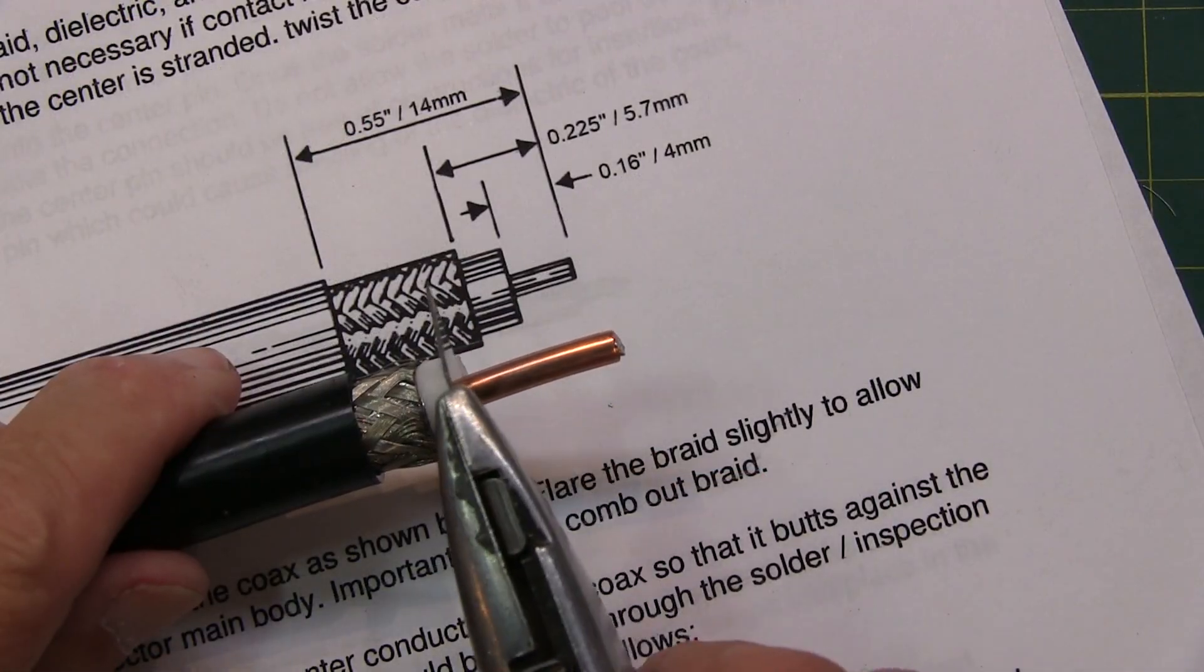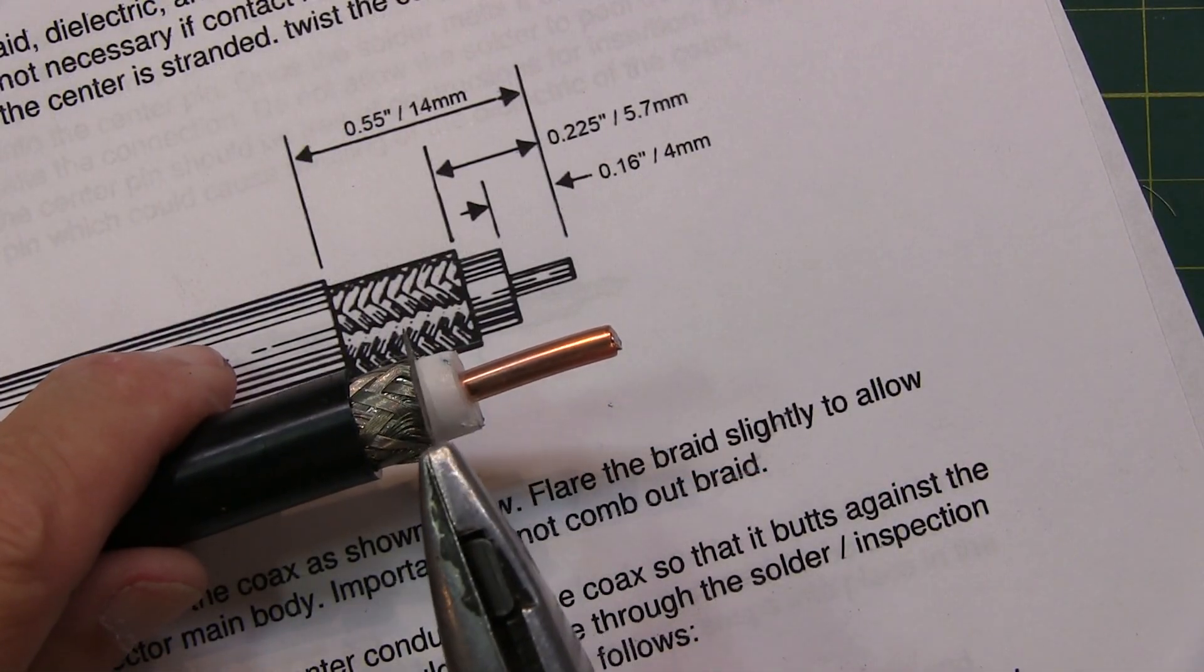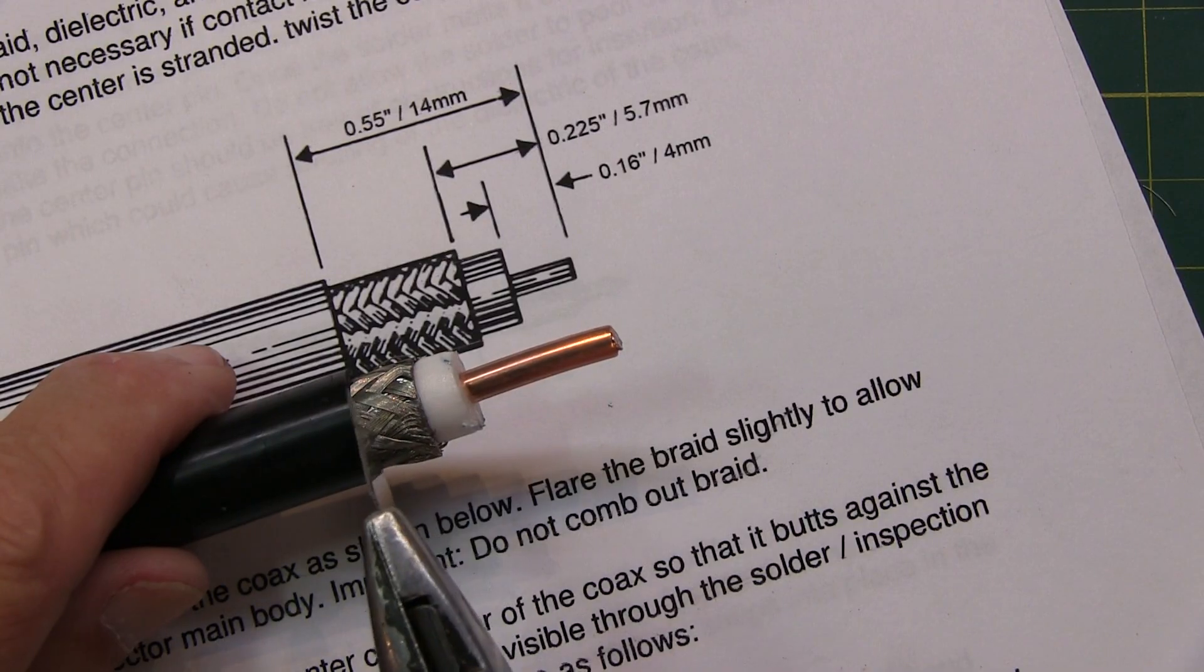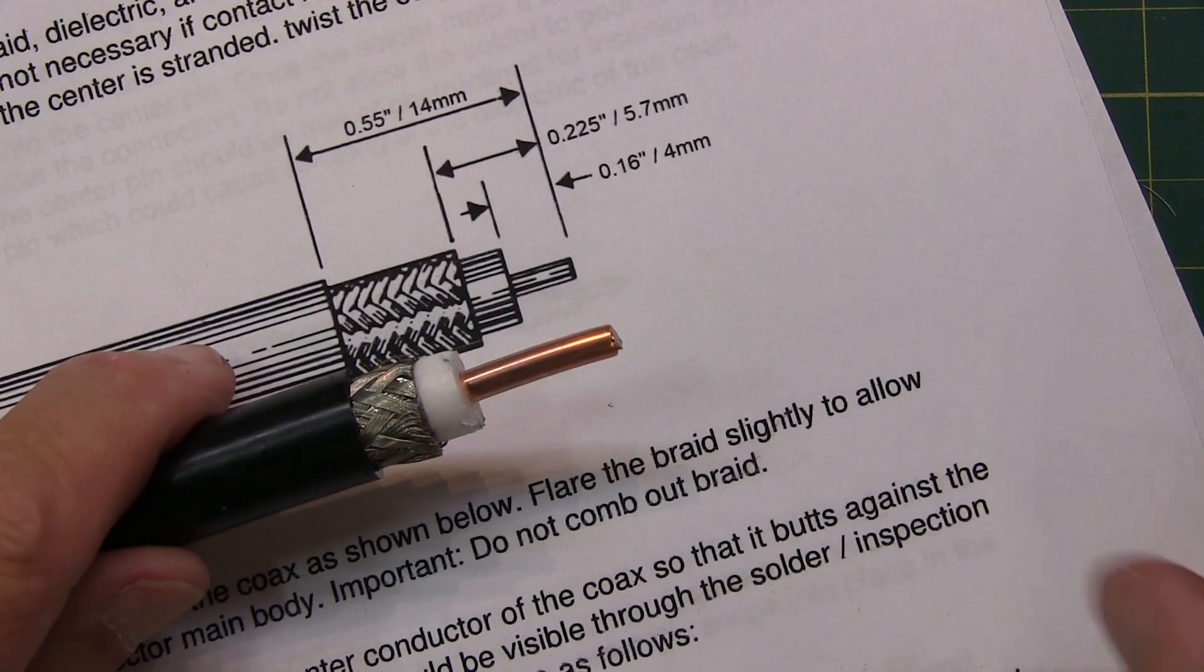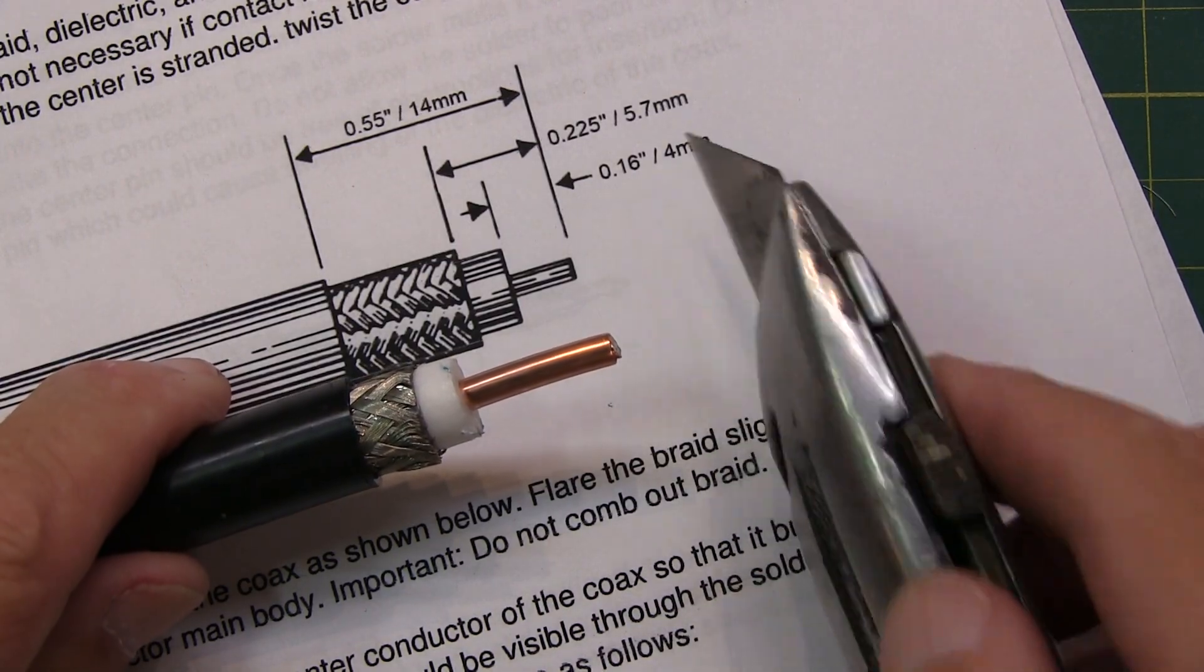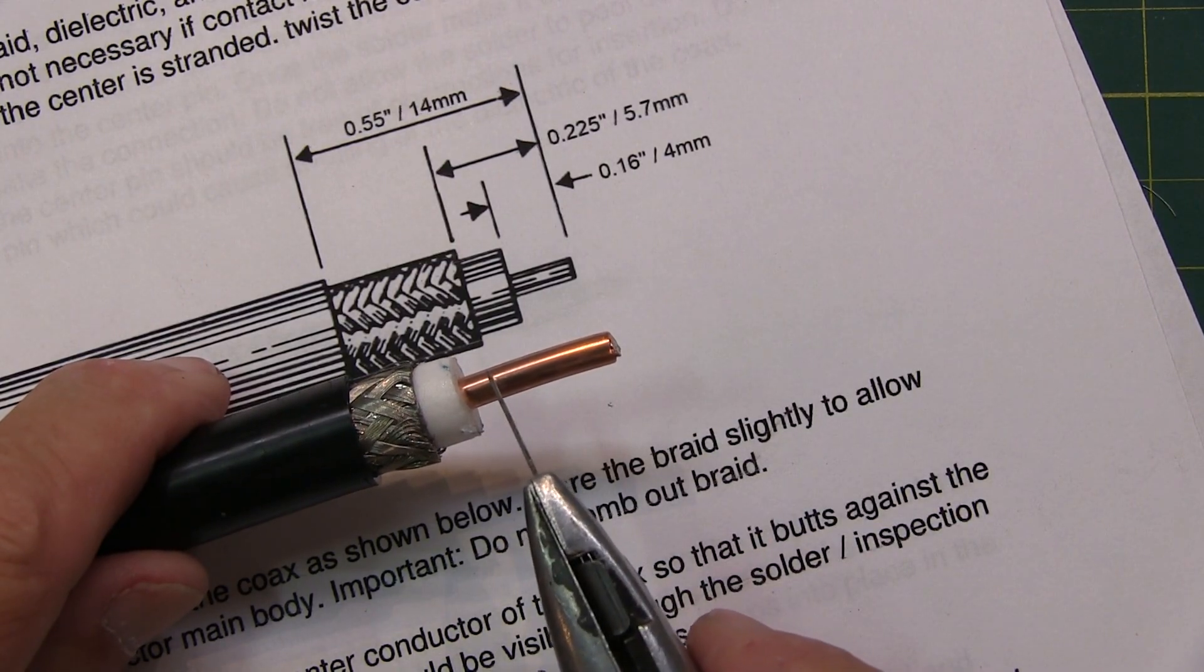By following this reverse method and cutting all the way through first, and then down through the shield second, and then just stripping off the outer jacket, we keep the braid in very good shape. Now all we need to do is just measure off this 0.16 and cleanly cut off the center contact.